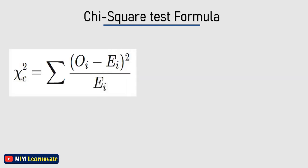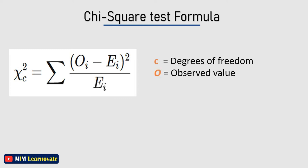Chi-square test formula: this is the formula for chi-square. In this formula, c is the degree of freedom, o is the observed value, and e is the expected value.